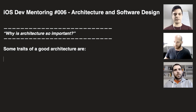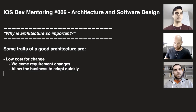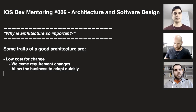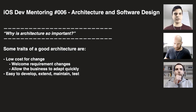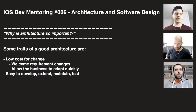Some traits of good architecture are low cost for change. You should welcome requirement changes. A good architecture allows extensibility, allows the business to adapt quickly, and also be able to add new features or extend a new feature, maintain the feature and test the features easily.